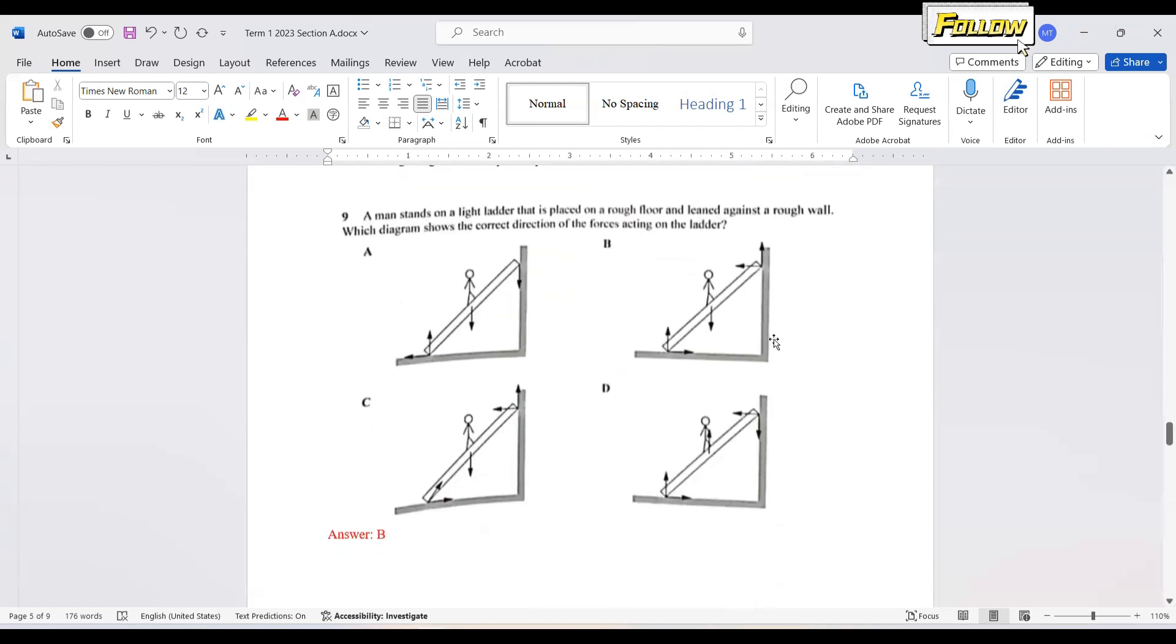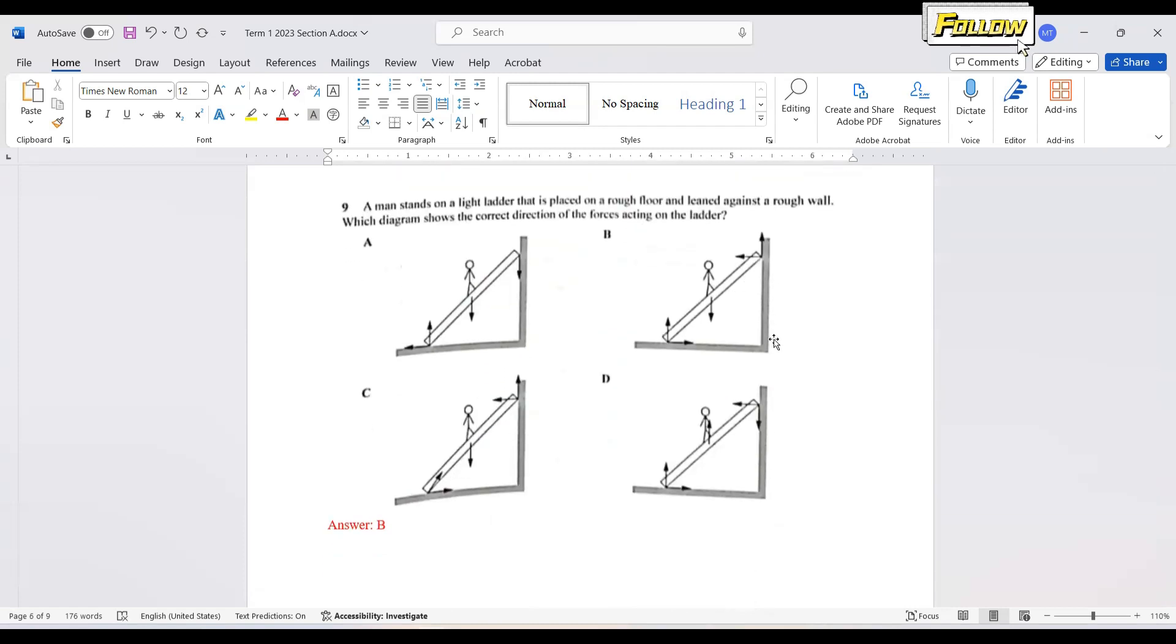Now we move on to question 9. I believe this should be a bonus question if you really understand about the forces. The man stands on the light ladder which is placed on a rough floor and leans against a rough wall. Rough means that there is friction force. Rough floor should give you a friction force in the horizontal component. A rough wall should give you the friction force in the vertical component. And then the vertical forces and the horizontal forces here is the reaction force acted on the ladder. And last one is the mass of the man and also the ladder. So the answer here is B.